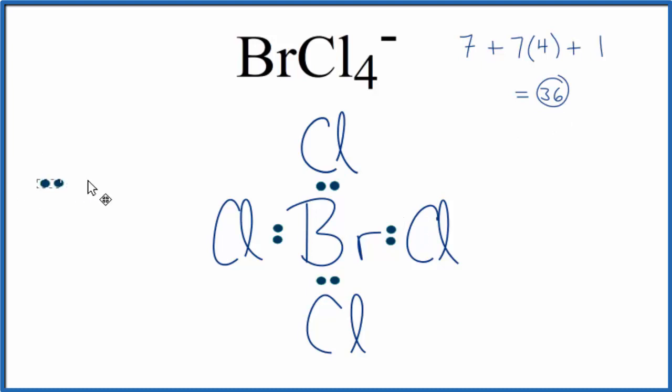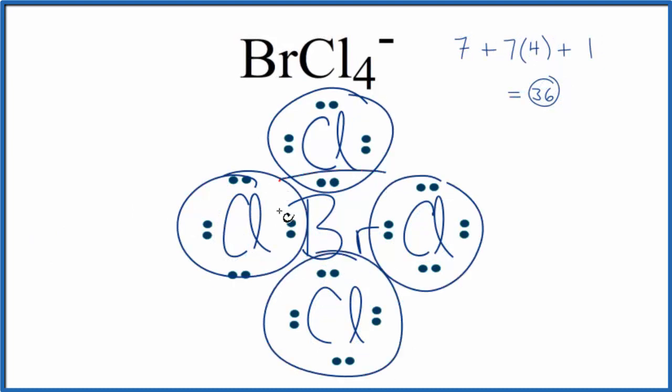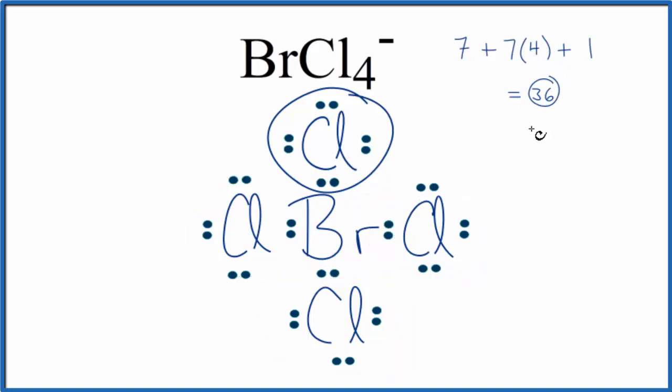We have 36. Now we'll complete the octets around each of the chlorine atoms. So at this point, each chlorine has eight valence electrons, and that central bromine also has eight valence electrons. The problem is we've only used 32 valence electrons. We have 36. So we actually have four more valence electrons we've got to put somewhere.